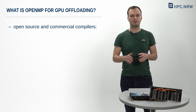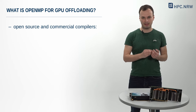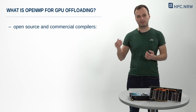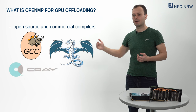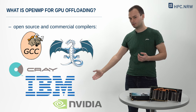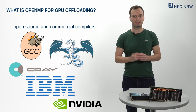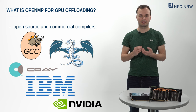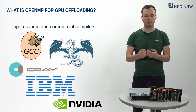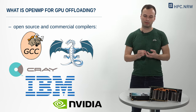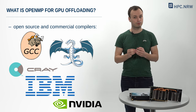Moreover, OpenMP GPU offloading is supported by many open source and commercial compilers, for example GCC, Clang, Cray, IBM compilers, and the NVIDIA HPC Software Development Kit. Software developers can simply add OpenMP directives in the source code and rebuild the application using an OpenMP GPU offloading enabled compiler to leverage the power of GPU computation.